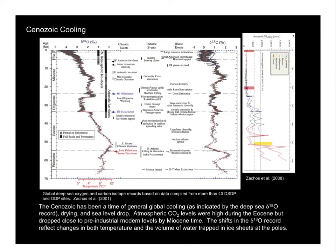Let me start with an overview of long-term climate trends. This figure is commonly referred to as the Zachos Curve, after the guy who compiled all the data. It represents a summary of stable oxygen isotopes and stable carbon isotopes from benthic — that is to say, bottom-dwelling — foraminifera for more than 40 deep ocean cores.